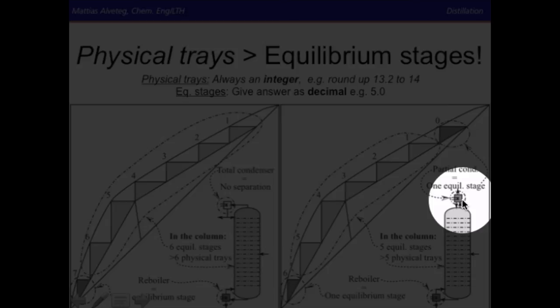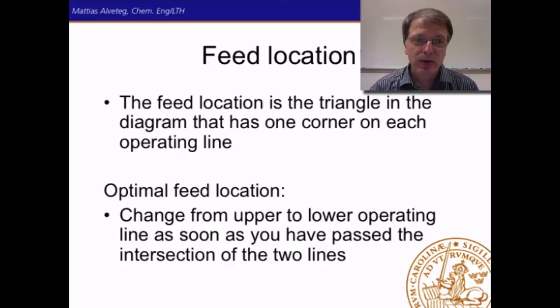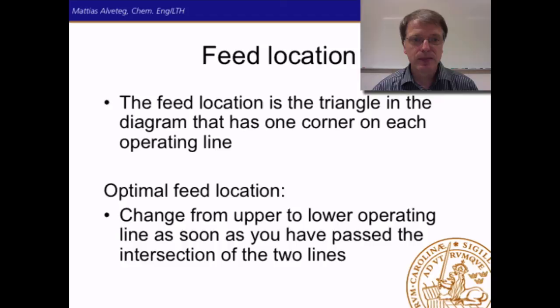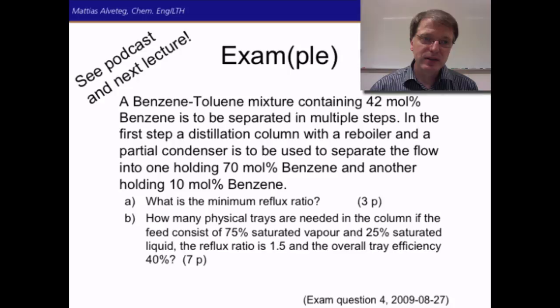What we haven't discussed yet is the feed location. The feed location is the triangle in the diagram that has one corner on each operating line. The optimal feed location is where you change from the upper to the lower operating line as soon as you've passed the intersection of the two lines — this way you get the minimum number of triangles in your drawing. We are now ready to do our first exercise, and there is a separate screencast on the webpage where we will solve one exam question taken straight from a 2009 exam.